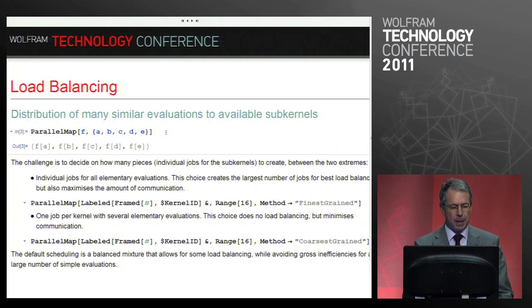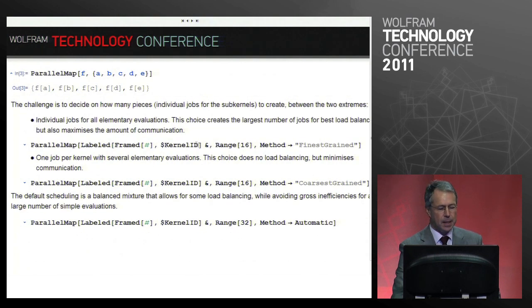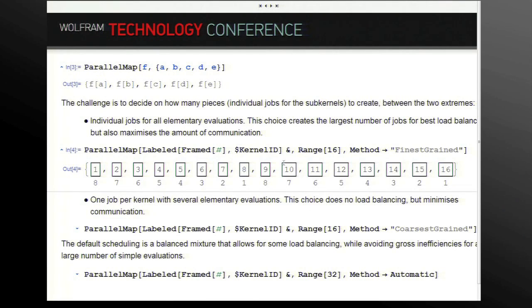Something simple as a parallel map can show you how it distributes the load onto different kernels. In the first example, I will generate individual jobs for all the F of A, F of B, and so on. The way to show you how it distributes is by labeling each evaluation by the kernel number which did the work. As I have eight of them, you can see it just takes the first eight and then the second eight, each of them individually.